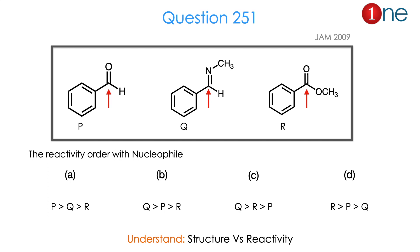Let us see the first question. They given three different compounds. P1 is an aldehyde, which is benzaldehyde. Q1 is an imine, which is attached with methyl on the N-position. And R1 is just an ester — the benzoic acid ester, which is the methylated one. They are asking the reactivity order of the nucleophile, so you have to guess which one will have higher nucleophilicity and which one will have lower nucleophilicity. From the three different compounds, you might realize the question is really about structure versus reactivity. The answer is A. Let us see how.